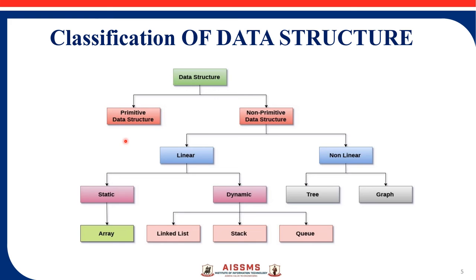Primitive data types such as integer, character, and float are already predefined, so they are primitive data structures. The opposite is non-primitive. Non-primitive data structures are data types derived from primitive data types. These data types are used to store groups of values, facts, or records. Examples are array, linked list, stack, tree, graph, and more.